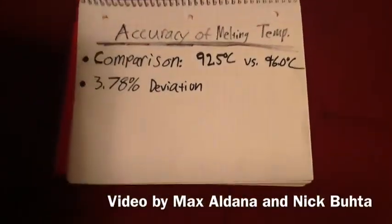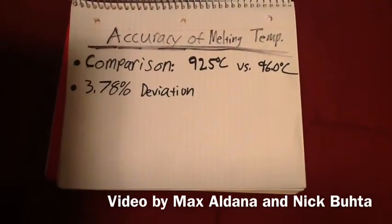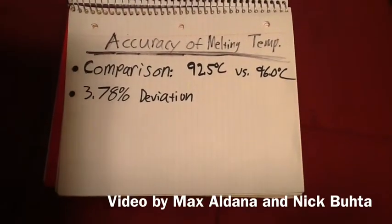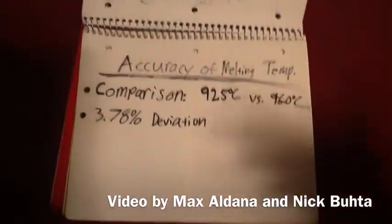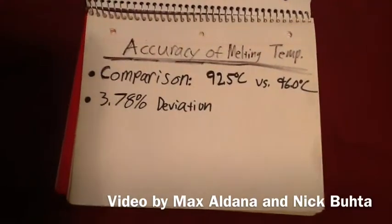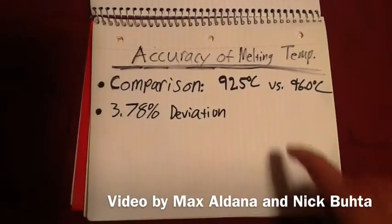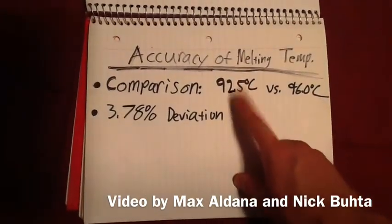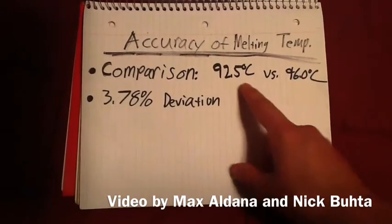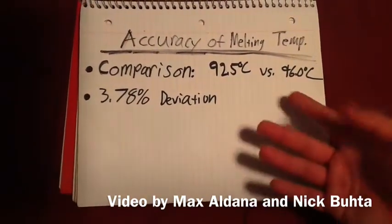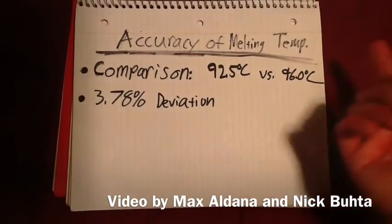Here's the last question that we're asked, basically asking us based on the accuracy of our melting temperature, would we say that what we created was actually the alum that we intended to make. Based on what we have, the melting temperature is supposed to be around 92.5, but in actuality our actual melting temperature was closer to 96.0 degrees Celsius.